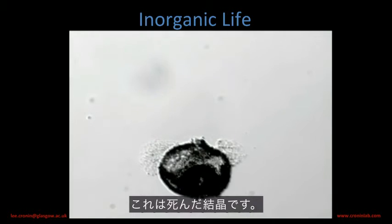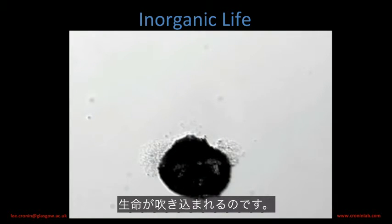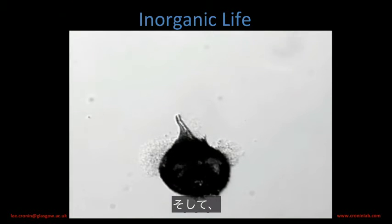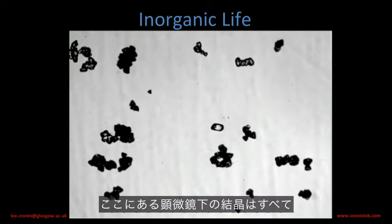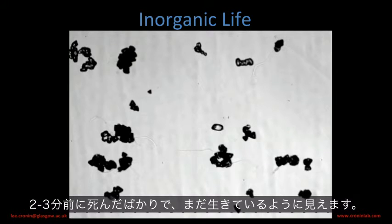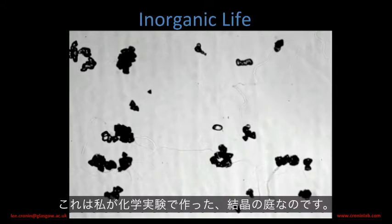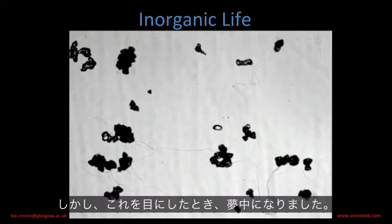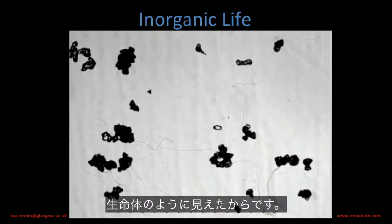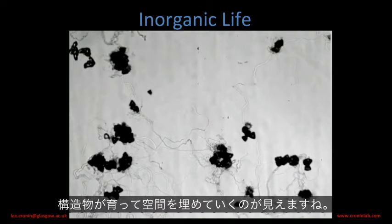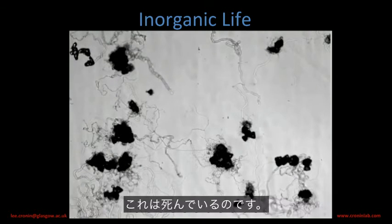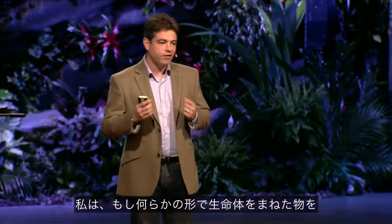So here's some inorganic life. This is a dead crystal, and I'm going to do something to it and it's going to become alive. You can see it's kind of pollinating, germinating, growing. This is an inorganic tube, and all these crystals here under the microscope were dead a few minutes ago and they look alive. Of course they're not alive — it's a chemistry experiment where we've made a crystal garden. But when I saw this, I was really fascinated because it seemed lifelike. You can see this architecture growing, filling the void. And this is dead. So I was positive that if somehow we can make things mimic life, let's go one step further — let's see if we can actually make life.